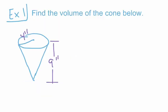For our first example, we're told to find the volume of the cone below. From our diagram, the radius of this cone is 4 inches and the height of this cone is 9 inches. So we go to V equals one-third pi R squared H.